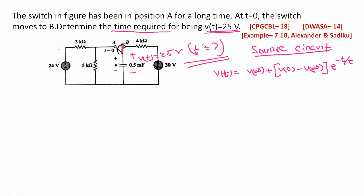The general source circuit equation is: Vt equals V-infinity plus (V0 minus V-infinity) times e to the power minus T by tau. For the source-free case, the equation simplifies to: Vt equals V0 times e to the power minus T by tau. The first targets are V0 and V-infinity from the source circuit and source-free circuit respectively.